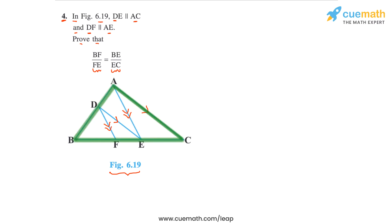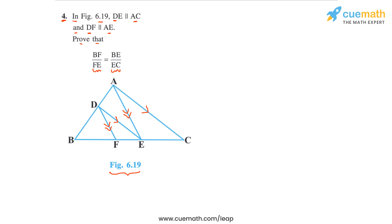Then we will apply the BPT to triangle ABC, because in triangle ABC, segment DE is parallel to AC. Applying the BPT to this triangle gives us BE by EC equal to BD by DA.